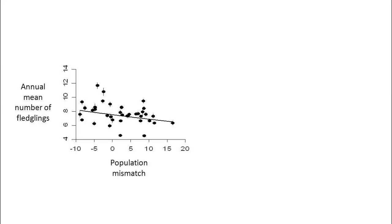Next, we looked at the effects of mismatch at the population level. This graph shows the effect of population average mismatch on the annual mean number of fledglings per female, with the data points here representing different years.